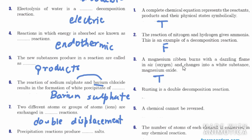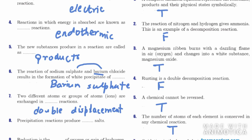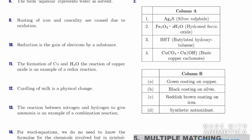Fourth: rusting is a double decomposition reaction — False. Fifth: a chemical change cannot be reversed — True. Sixth: the number of atoms of each element is conserved in any chemical reaction — True. Seventh: oxidation is the loss of electrons from a substance — True. Eighth: the term 'aqueous' represents water as solvent — True. Ninth: rusting of iron and rancidity are caused due to oxidation — True.